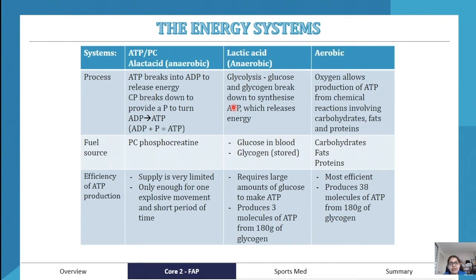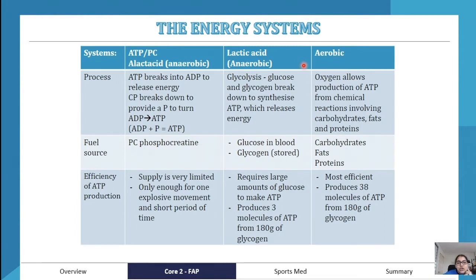The lactic acid system is also anaerobic, meaning it does not require oxygen to produce energy. The process that happens is glycolysis — glucose and glycogen are broken down to synthesize ATP, which releases energy. Glycogen is essentially glucose stored in the body. So the energy in the body always comes from ATP, but the way it's produced differs between systems.